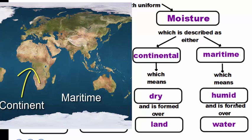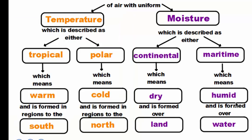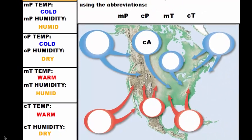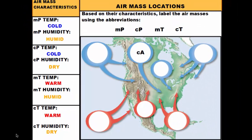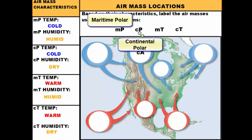So those are the major characteristics that we use to describe air masses. Let's take a look at where they form — their source regions — and what they are called and how we write them out. Here we have a picture of North America with big blue bubbles in the north and big red bubbles in the south. These represent the source regions where these air masses form and show us the direction they move. There are five different types of air masses, but we're really going to concentrate on four: maritime polar, continental polar, maritime tropical, and continental tropical.